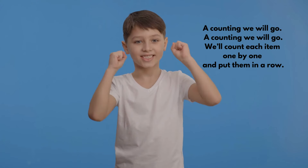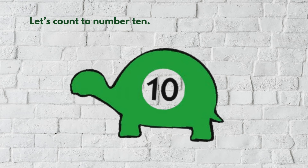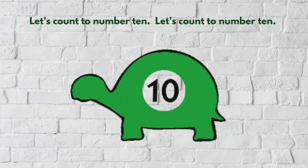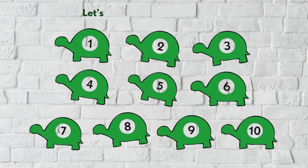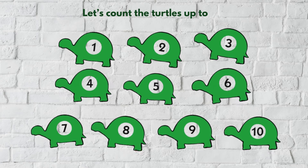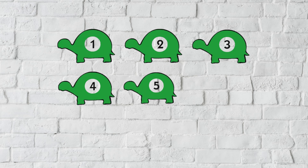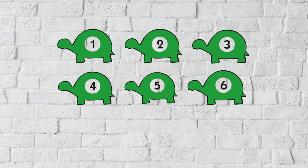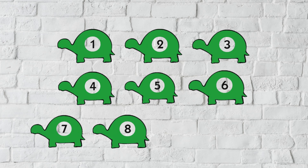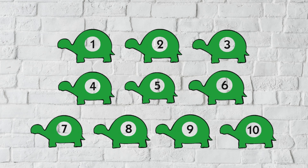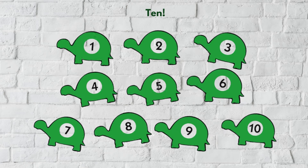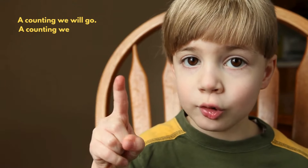A-counting we will go, a-counting we will go, we'll count each item one by one and put them in a row. Let's count to number ten, let's count to number ten, let's count the turtles up to ten: one, two, three, four, five, six, seven, eight, nine, ten.